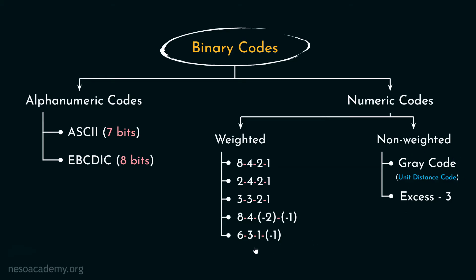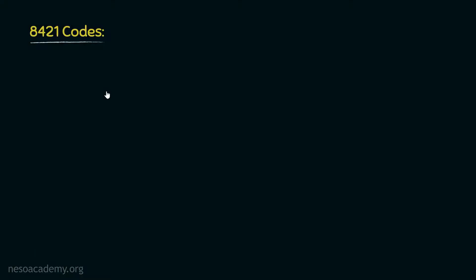In the previous session we also learnt that all of these weighted codes are self-complementary. So instead of learning all of them one by one, we will learn about the 3321 Codes using the logic of which we can also implement the rest of the codes. Let's begin with the 8421 Codes.